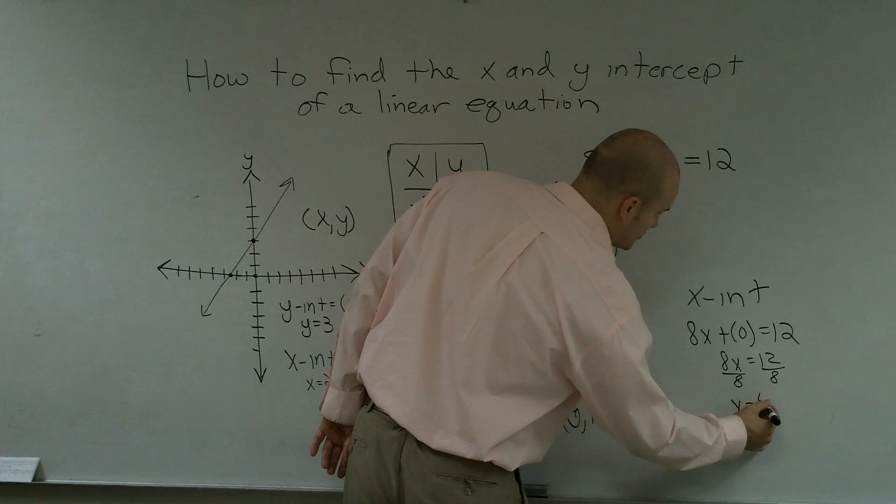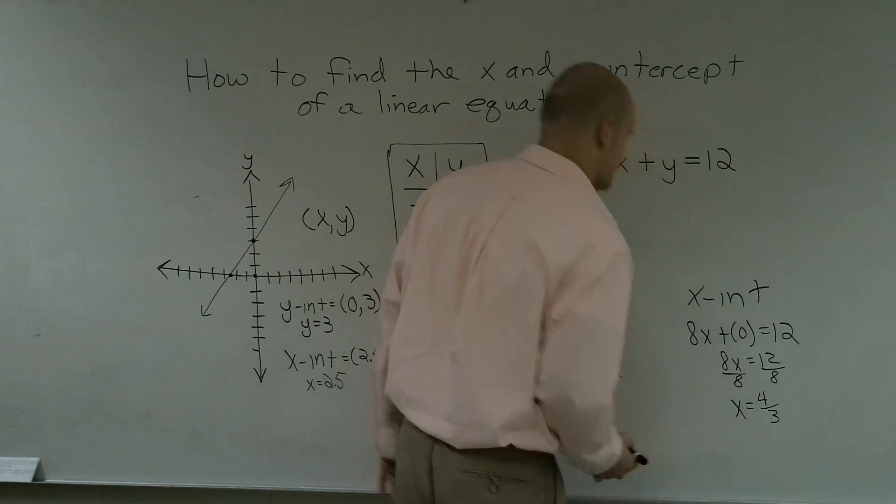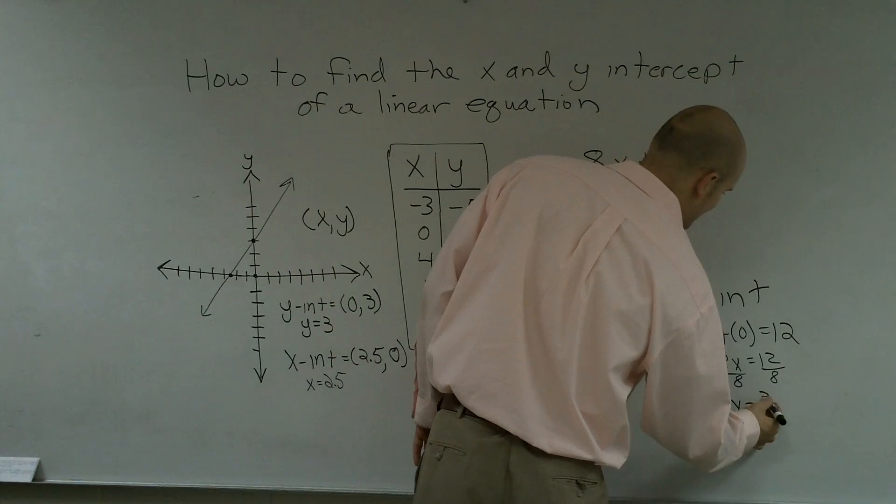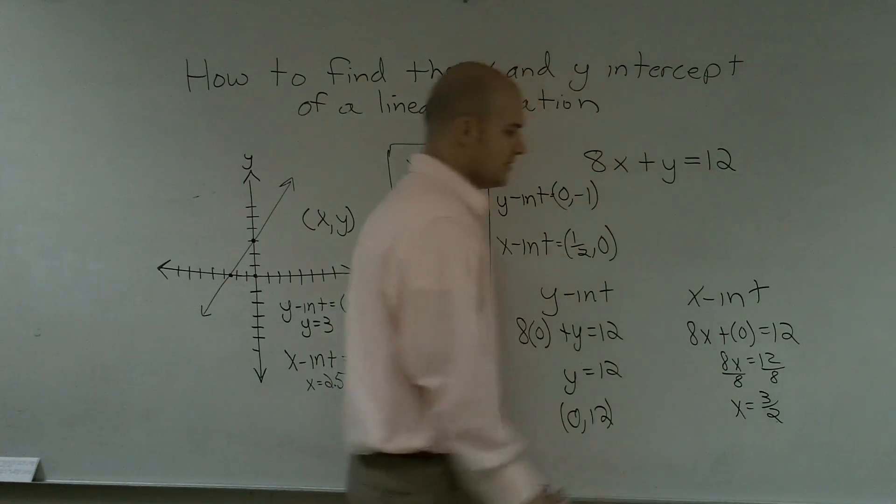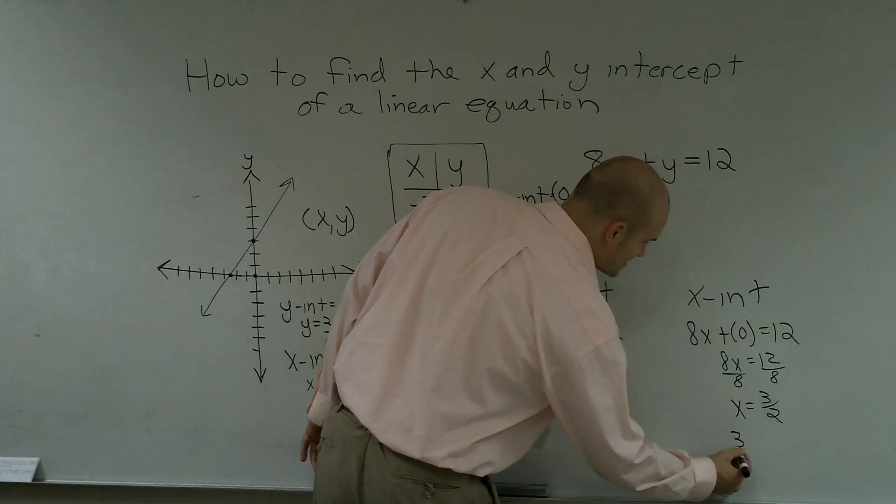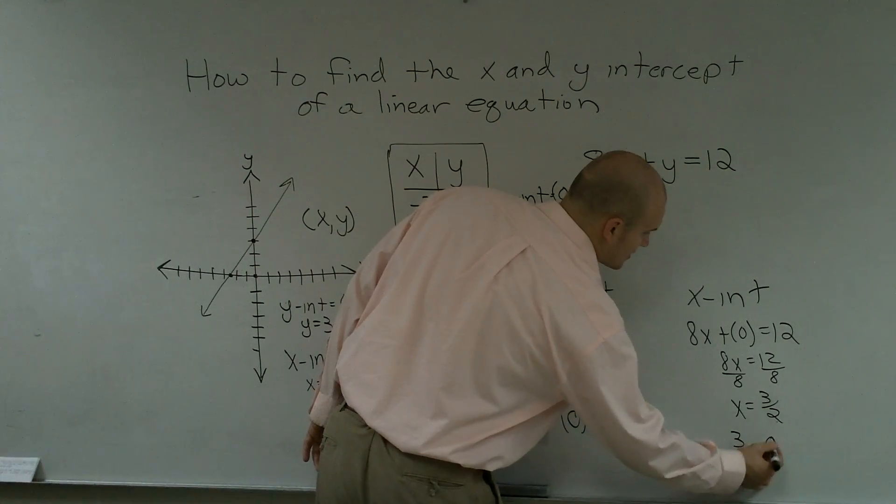So x equals, I'm sorry, 3 halves. If you divide the top and the bottom by 4, you get 3 halves. Therefore, the coordinate point for this would be 3 halves comma 0.